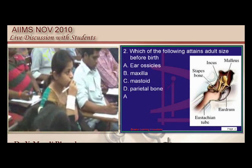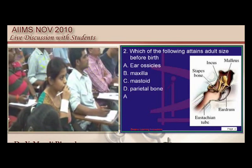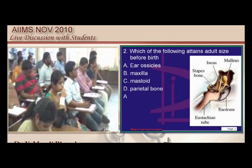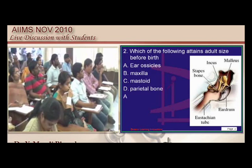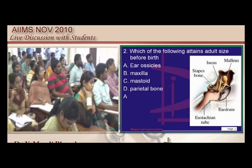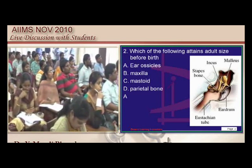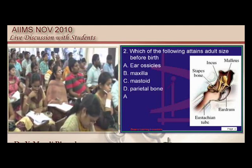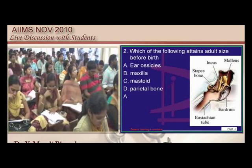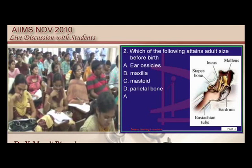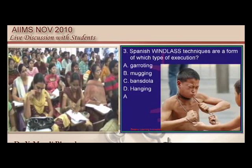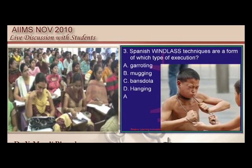By the time of birth itself, which structure develops typically in the ENT? It is the ear ossicles which are the ones that develop such that by the time the child is born, we have adult-size ear ossicles — that is what I like to underscore to all of you.